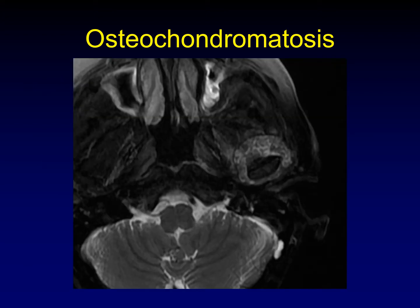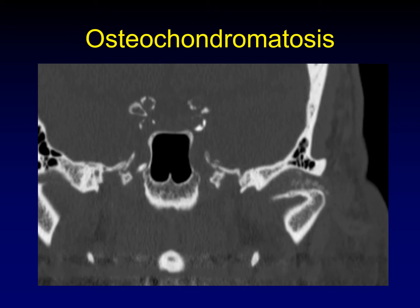Here's what osteochondromatosis looks like on a T2-weighted MRI. You can see, in addition to the large effusion and expansion of the synovial space, there are T2 dark dots scattered all through the synovial fluid — those are the loose bodies. Here it is on CT, and you can see individual discrete nodules of calcium scattered through the joint, unlike pseudogout's broad area of ill-defined calcium deposition.